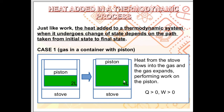The gas reaches a final volume of 4 liters. In this case, heat flows into the system so Q is not zero, and the gas performs work on the piston so the work done is also not zero.